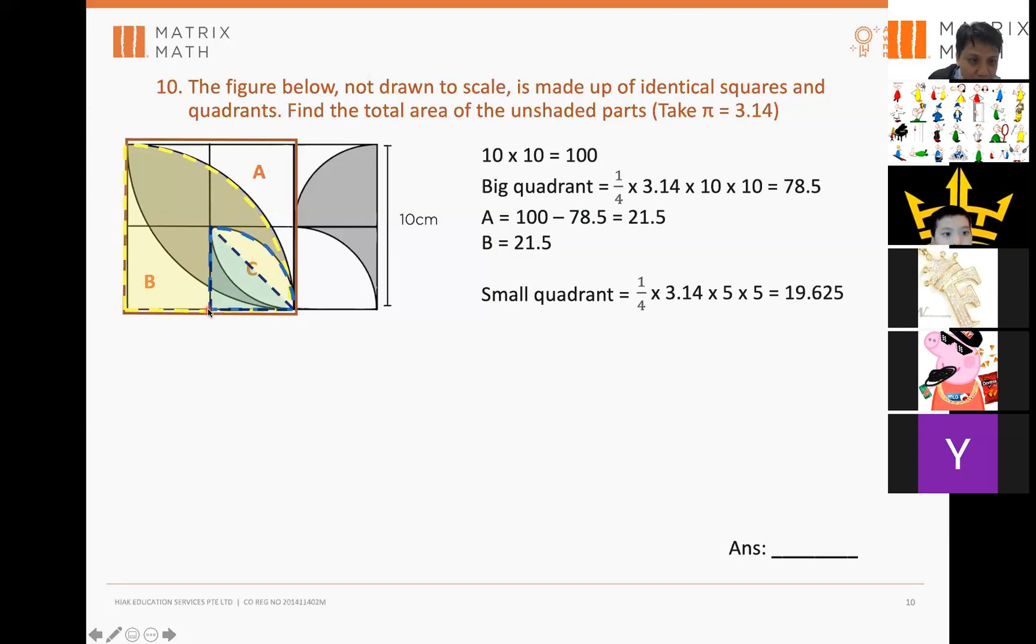So, let's find the area of the triangle. Again, the area of the triangle is half times base, which again is 5. The base is 5, which is also the radius of the small quadrant. The height is 5. So, the triangle is half times base times height. 5 times 5. Half times 5 times 5 is 12.5.